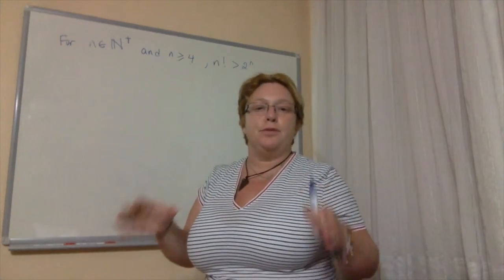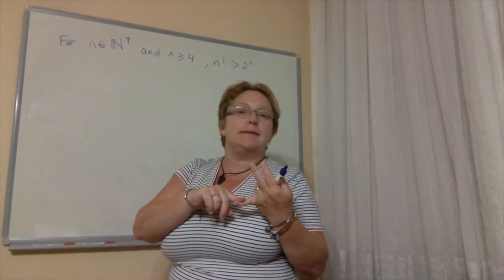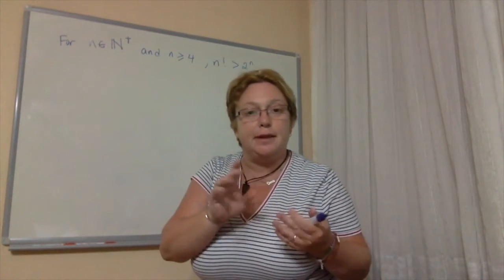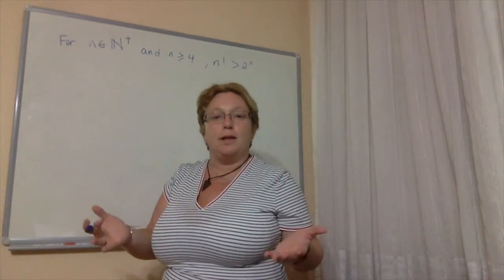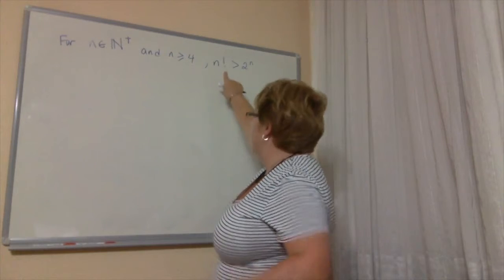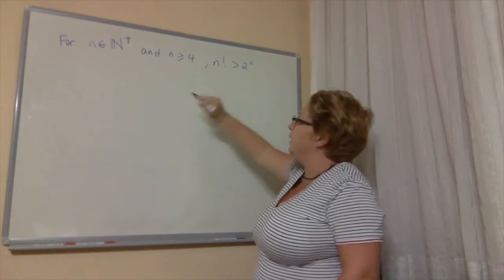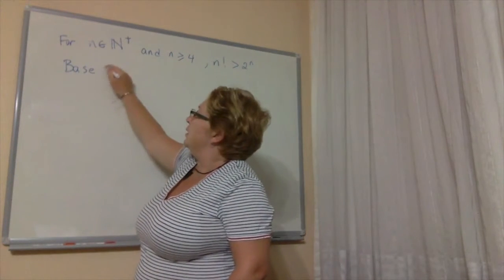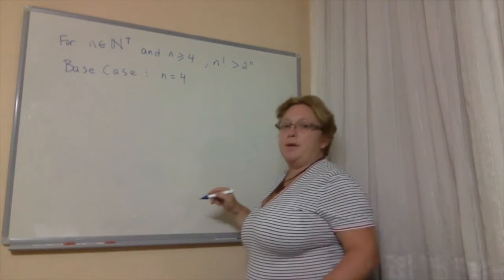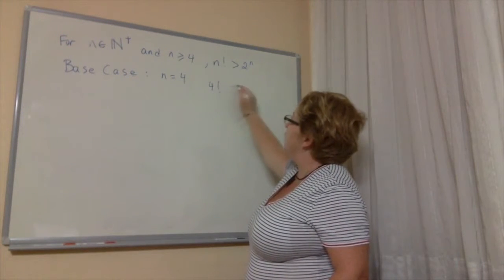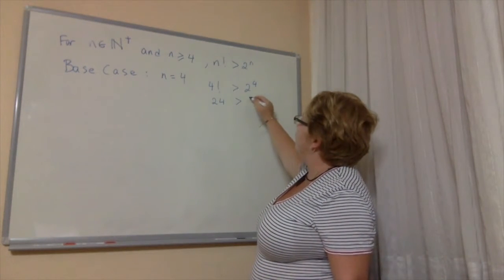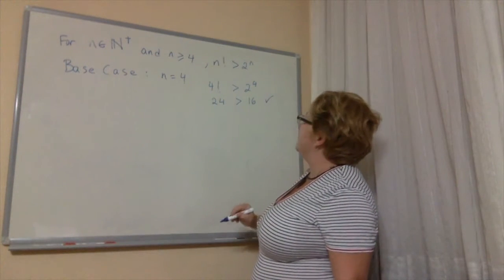We've now done induction proofs for a sigma formula and a divisibility situation. The third type we'll cover is an inequality. For n, a positive integer greater than or equal to 4, we have the statement n factorial is greater than 2 to the n. The base case is therefore n equals 4. We compute 4 factorial equals 24 and 2 to the 4th equals 16, and since 24 is greater than 16, the base case is proven.